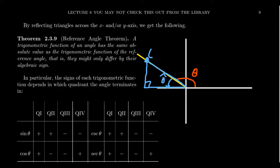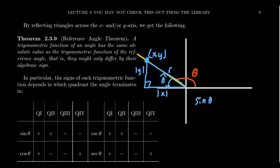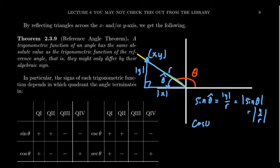Because if you have a point (x, y) with distance r, and the x-coordinate gives the adjacent side, then the length of that adjacent side is the absolute value of x, and the opposite side's length is the absolute value of y. The distance r is always positive. So sine of theta-hat equals |y|/r, which equals the absolute value of sine of theta, since sine is just y over r. Similarly, cosine of theta-hat equals |x|/r, which equals the absolute value of cosine of theta, since cosine is x over r.